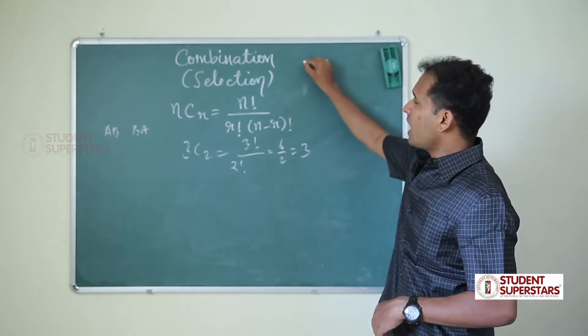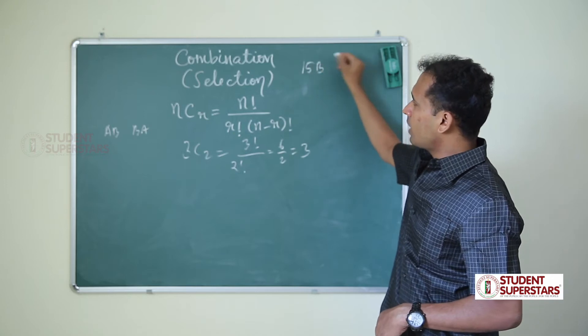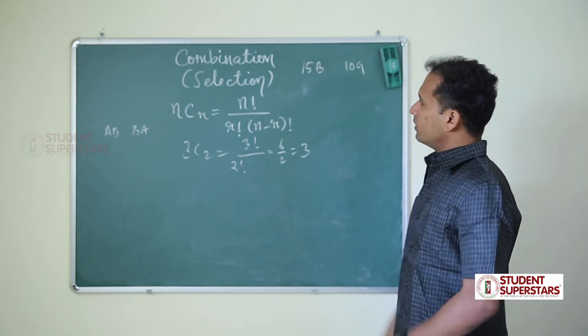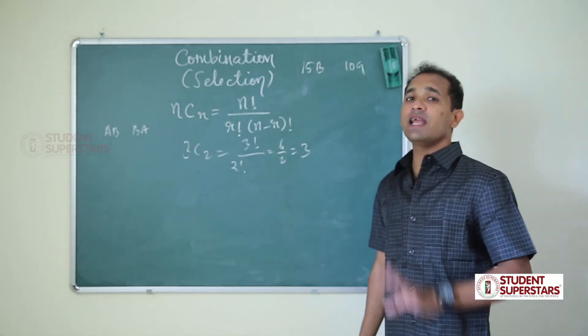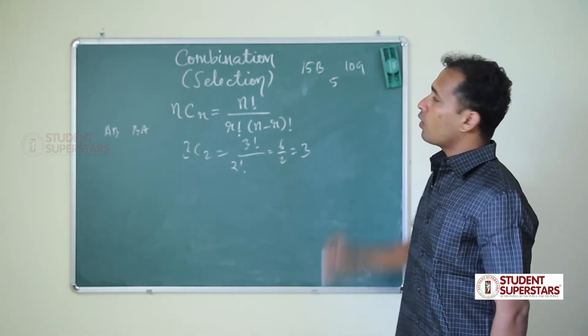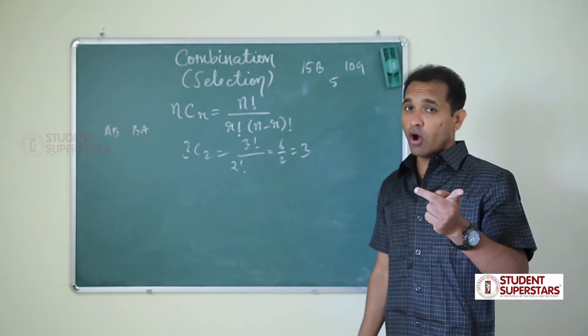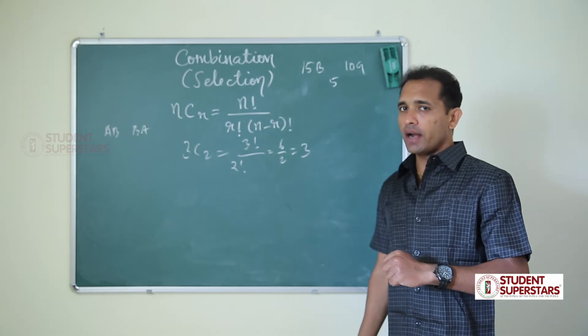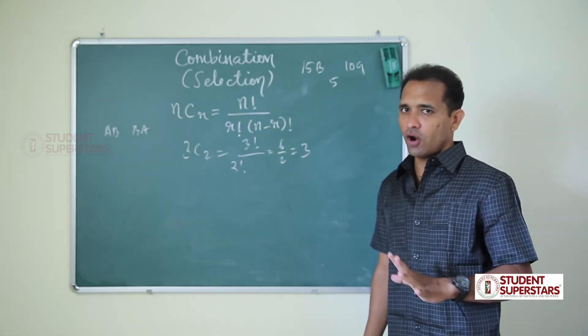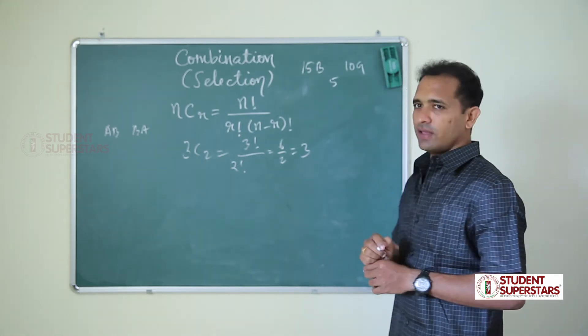For example, there are 15 boys and 10 girls. We should form a team of 5. How? We can choose 3 boys and 2 girls, or 2 boys and 3 girls. So there is a difference here.